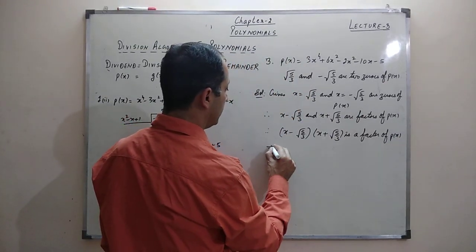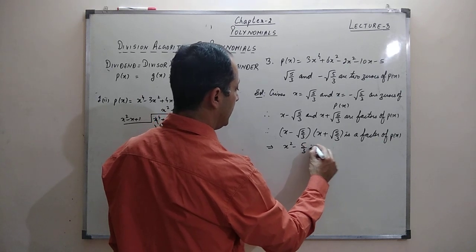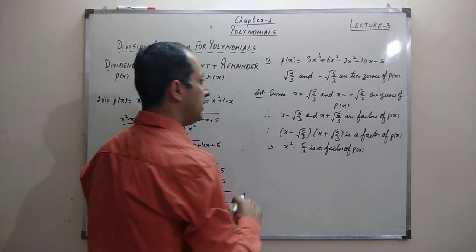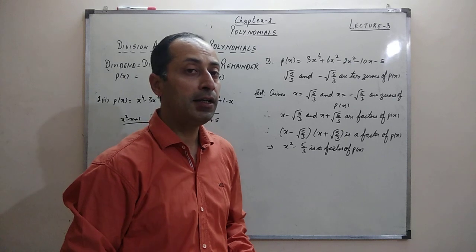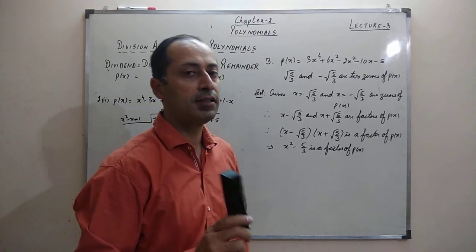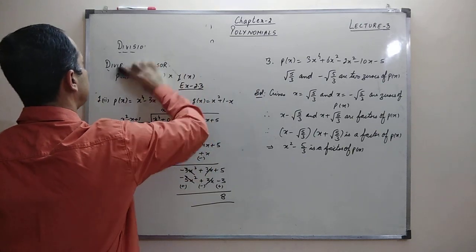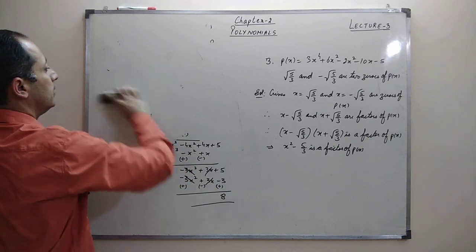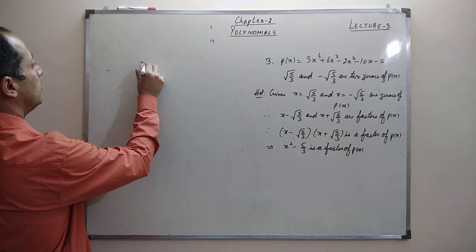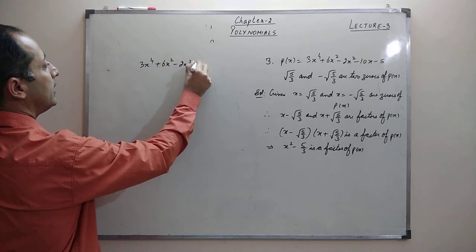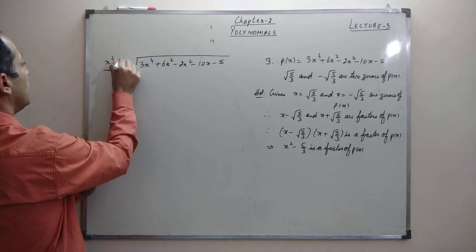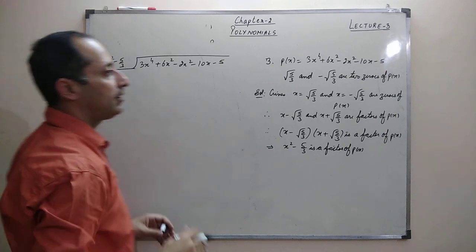When I multiply those two factors I get x² - 5/3 as a factor of p(x). This means when I divide p(x) by x² - 5/3, the remainder should be zero — that is the meaning of factor. If the remainder doesn't come out to zero, you have made a mistake. So now I divide 3x⁴ + 6x² - 2x² - 10x - 5 by x² - 5/3.